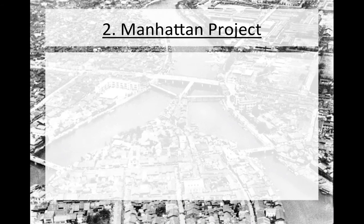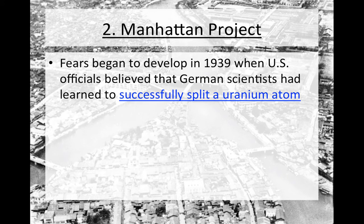Turning to the Manhattan Project — the Manhattan Project was the code name for the development of the atomic bomb. It all started in 1939 when U.S. officials began to believe that German scientists had learned how to successfully split a uranium atom. Essentially, the Germans had discovered the roadmap or the blueprint for how to create an atomic weapon.